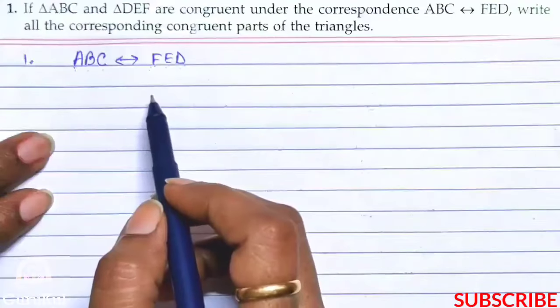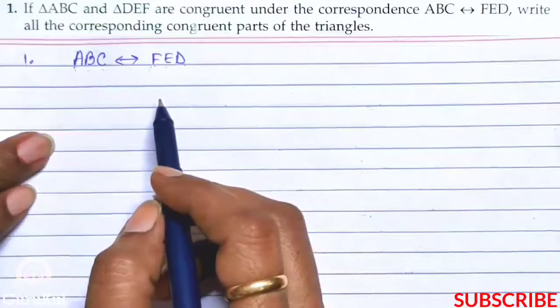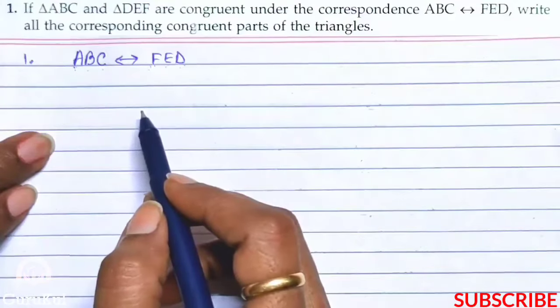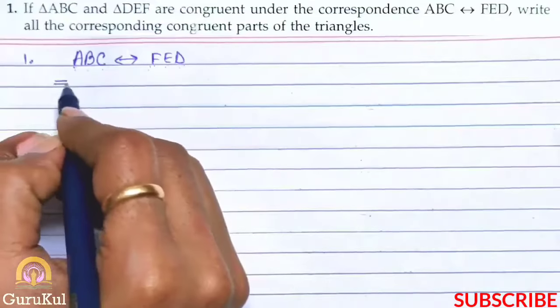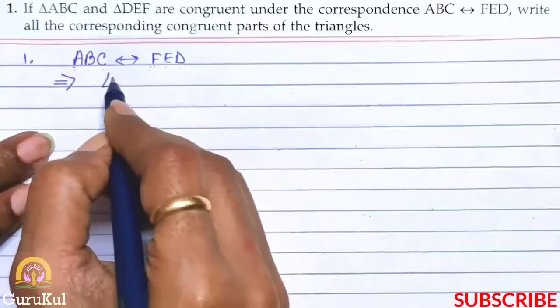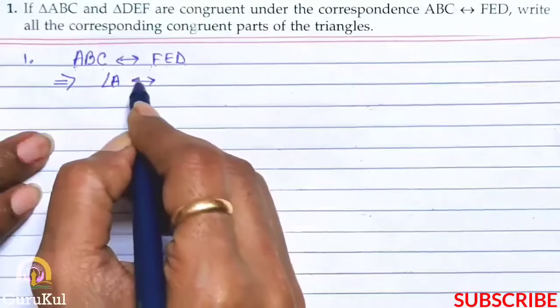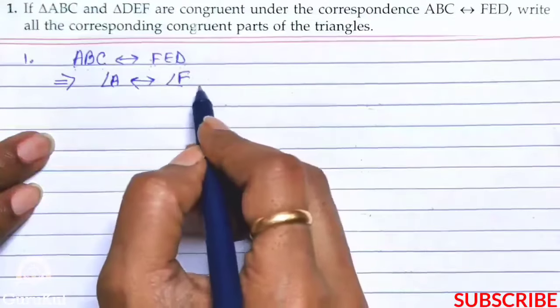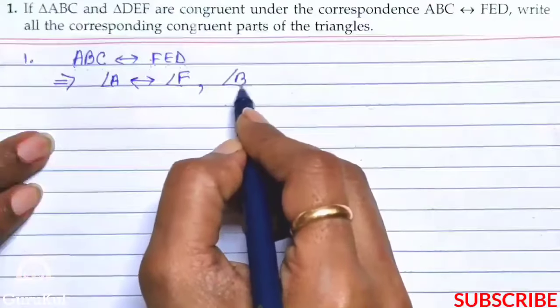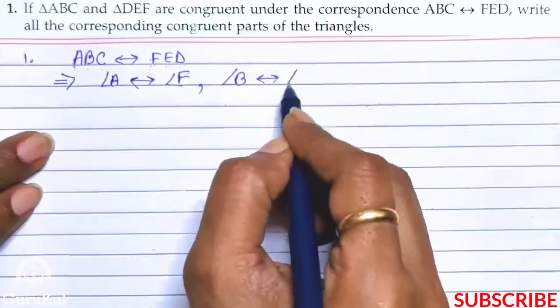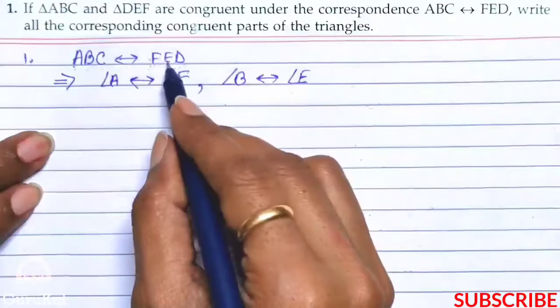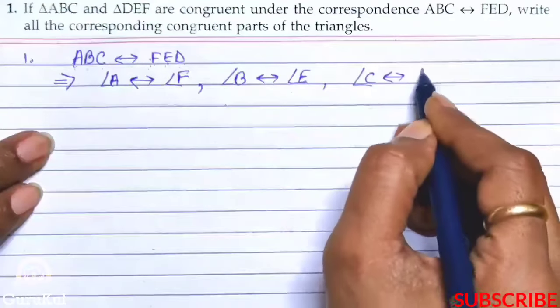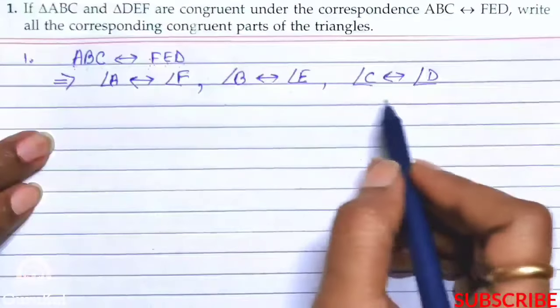Now we will start. It says write all the corresponding congruent parts of the triangle. That means we have to mention angles as well as sides. So first we will do angles. So angle A is correspondence to angle F, first and first. Then comes angle B is correspondence to angle E, second and second. Then comes angle C is correspondence to angle D. This completes our angles.